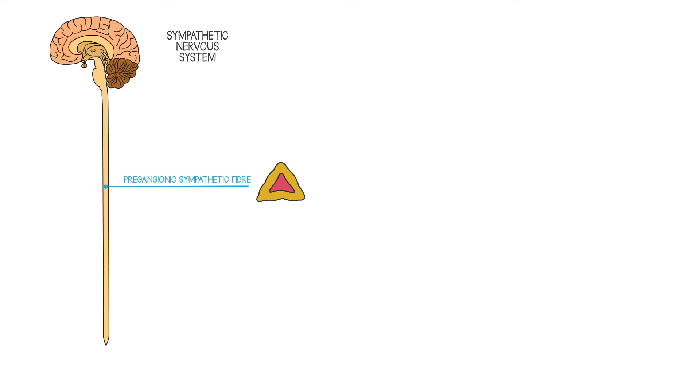The adrenal medulla is stimulated to secrete adrenaline into the blood by the sympathetic nervous system. Sympathetic fibers traveling from the spinal cord reach the adrenal medulla and stimulate the cells there which release adrenaline in response.